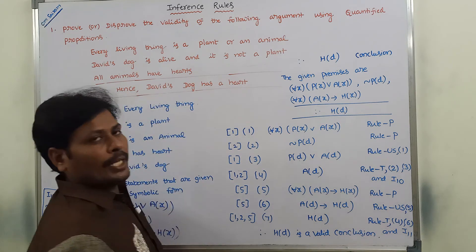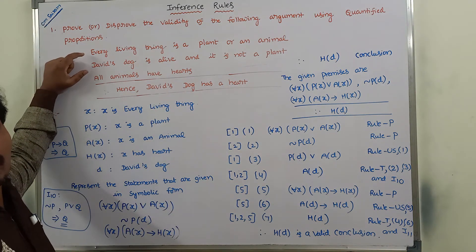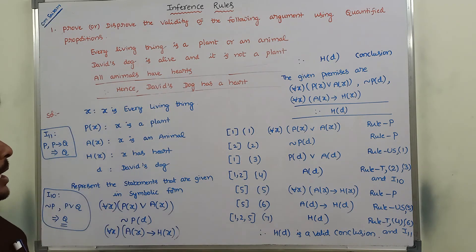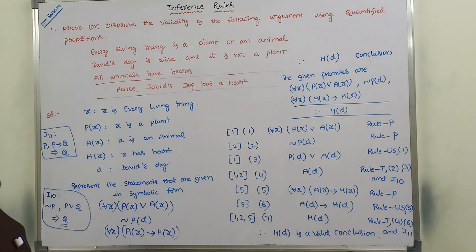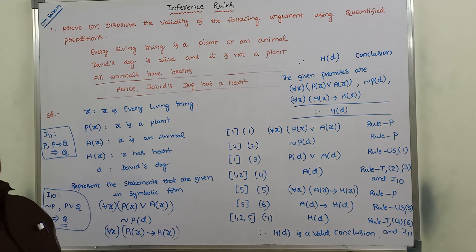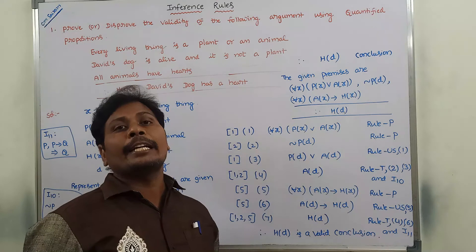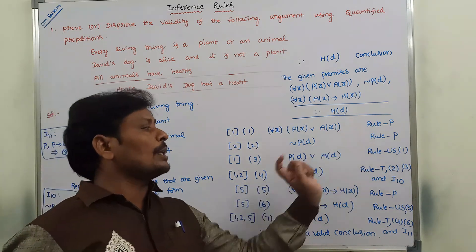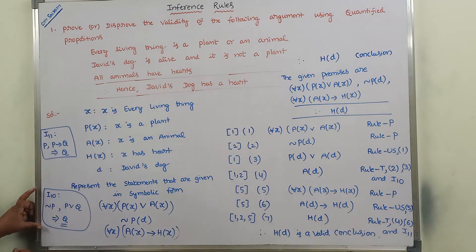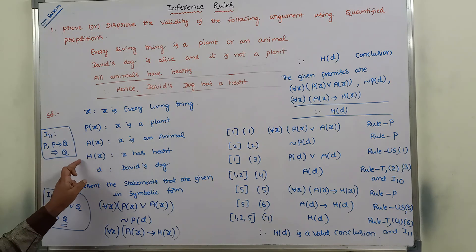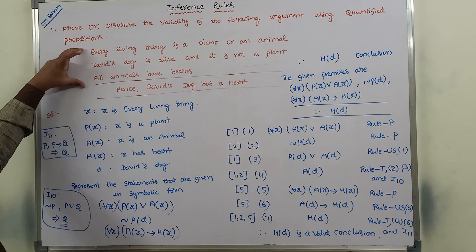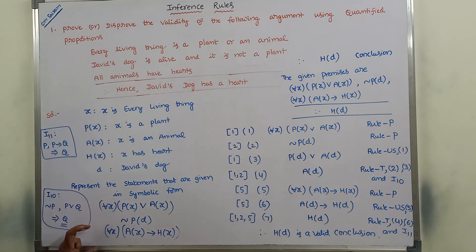We have used all three premises and derived the conclusion H of D. H of D means David's dog has a heart — H is the predicate and D is the subject David's dog. Therefore H of D is a valid conclusion. We can say that these three quantified propositions derive the conclusion, and that conclusion is valid. In this way we prove that given propositions derive a conclusion using Rule P, Rule T, Rule US, and implication formulas I10 and I11.